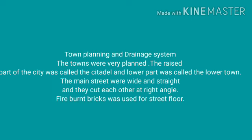Town planning and drainage system of the Indus Valley Civilization. The towns were very well planned. The raised part of the city was called the Citadel, and the lower part was called the Lower Town. The main streets were wide and straight and they cut each other at right angles. Fire-burnt bricks were used for street floors.